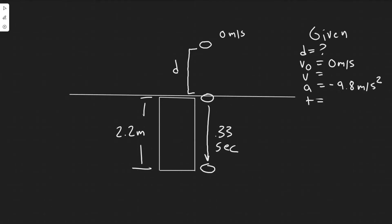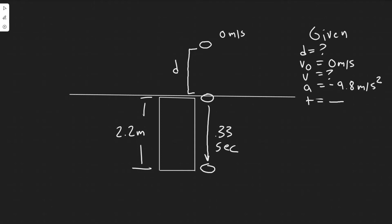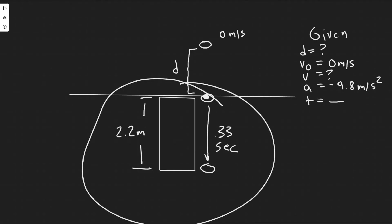Acceleration we also know: it's minus 9.8 meters per second squared — that's the acceleration due to gravity. Whenever you have a stone falling, you use this acceleration. So we have two variables and I need three. There's no way to find time directly, so I'm going to need the final velocity at the end of this interval. That velocity is the same as the initial velocity going into the window interval — that's the key trick to this problem.